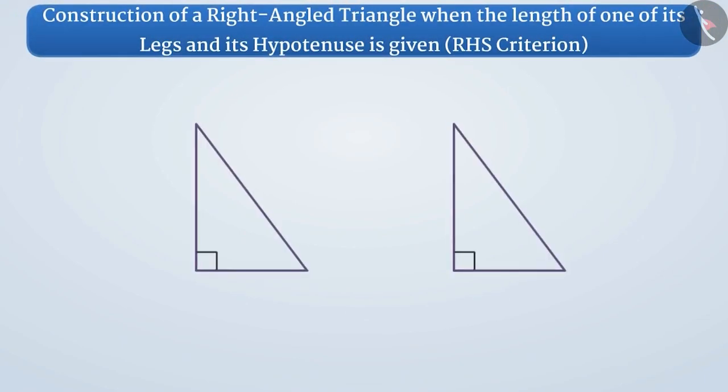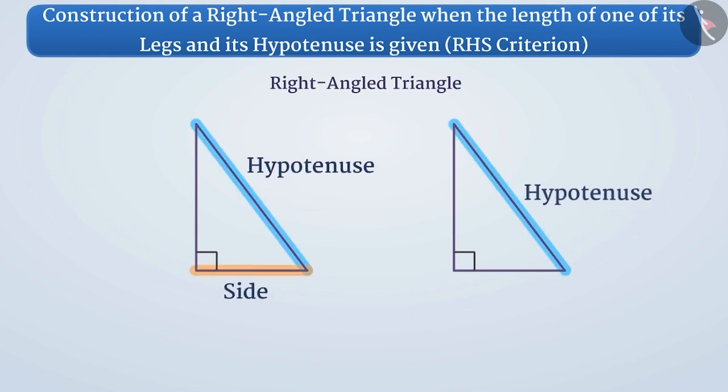You might recall that if the hypotenuse and one side of a right-angled triangle is equal to the hypotenuse and one side of another triangle respectively, then both the triangles are congruent. This rule of congruency is also known as the RHS congruency criterion.